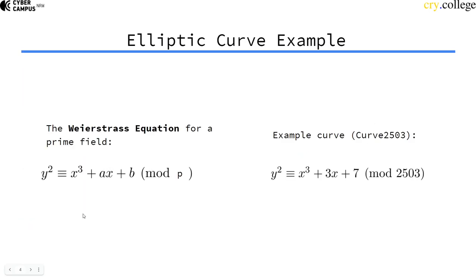So if we look for example at a prime field, Fp, the curve equation would look like this. It's the same equation just that the right hand side is equivalent to the left hand side mod p.